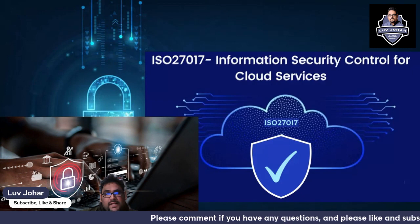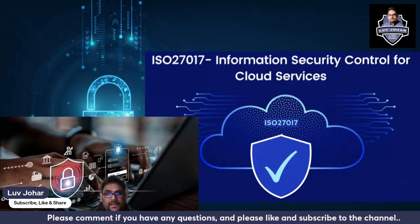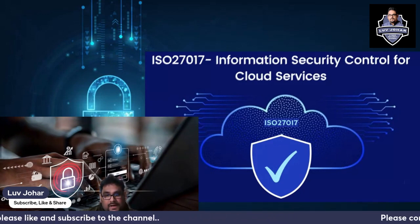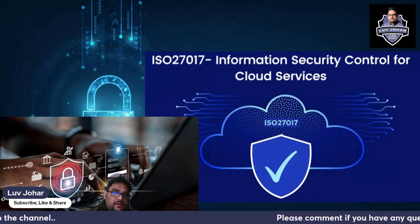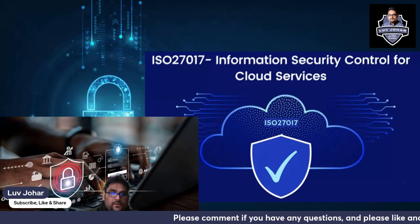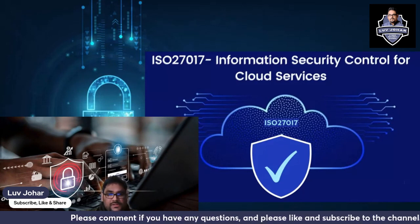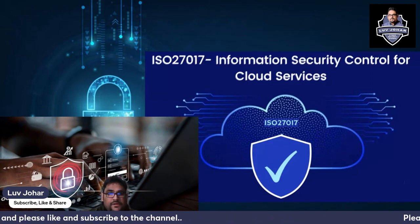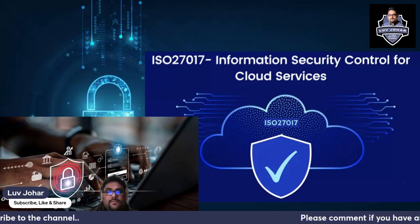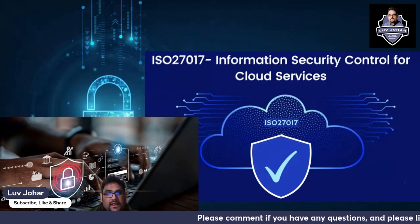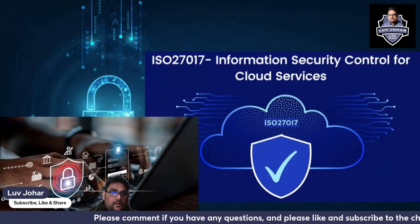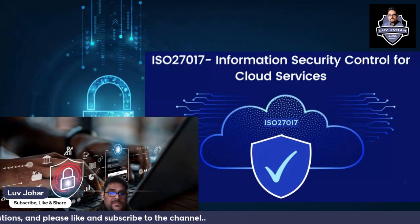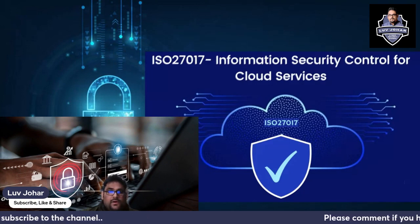ISO 27017 provides clear roles and responsibilities. When implementing it, you define roles and responsibilities both at the cloud service provider side and at the cloud customer side. This clarity establishes accountability and ensures that both parties understand their respective obligations in maintaining a secure cloud environment. Without clear roles and responsibilities, you cannot establish accountability.